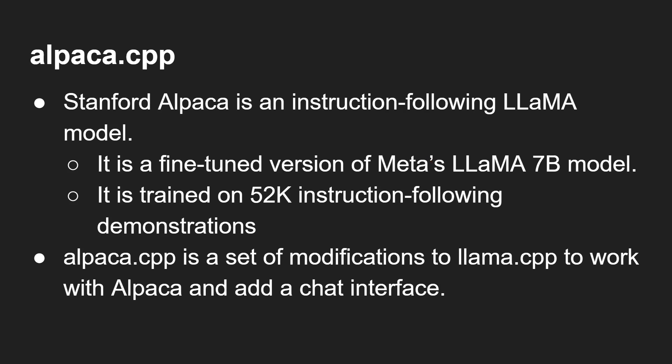The model we're going to use for the demo is Alpaca. LLaMA and Alpaca — they're all going along together. Alpaca is the LLaMA model fine-tuned to make it an instruction-following model — you give it an instruction and it follows it, trained on 52,000 instruction-following demonstrations. There's another project called alpaca.cpp, which is a set of modifications to llama.cpp to work with Alpaca and add a chat interface. All the GitHub repository links are in the description and they're really easy to set up.